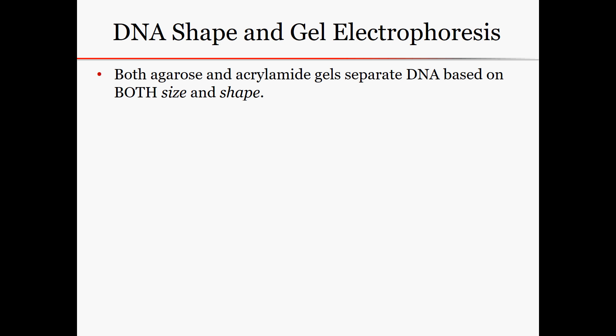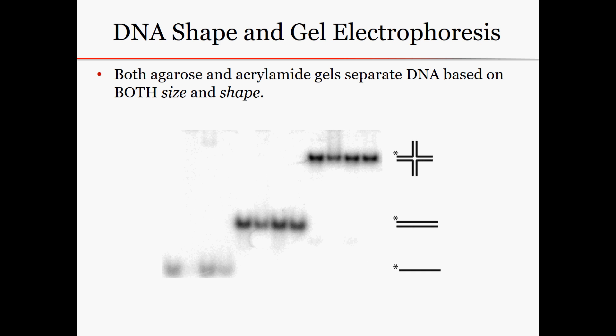Finally, let's talk about DNA shape and how that affects migration through a gel. DNA will run differently based on both size and shape. Here's an example on an acrylamide gel where in each case each DNA strand has the exact same number of nucleotides, but the fact that it's single-stranded versus double-stranded versus a Holliday junction is going to cause it to move differently through a gel.